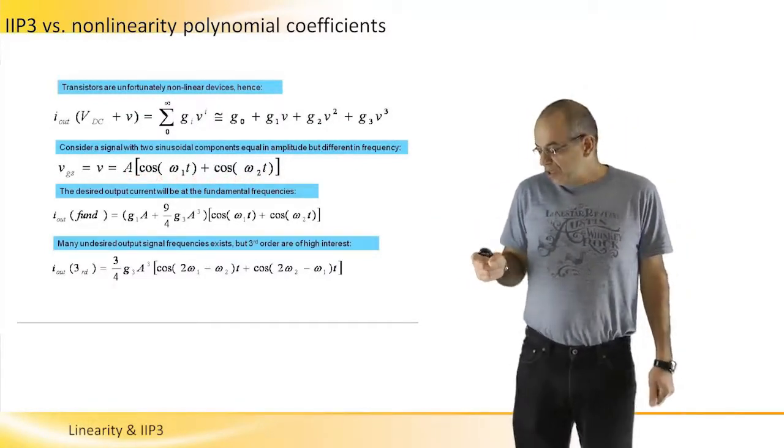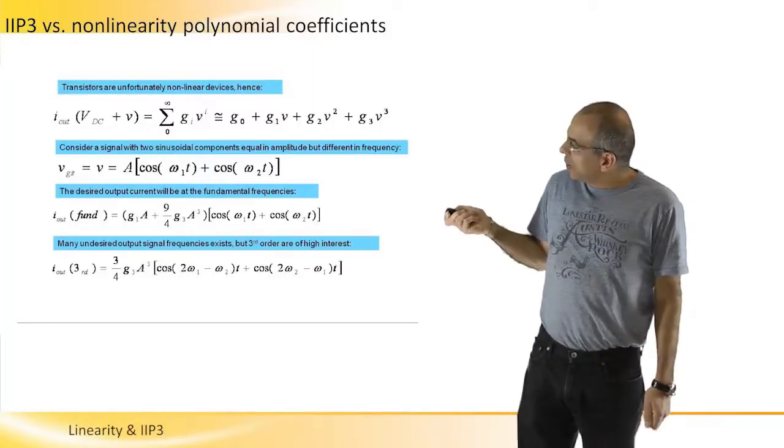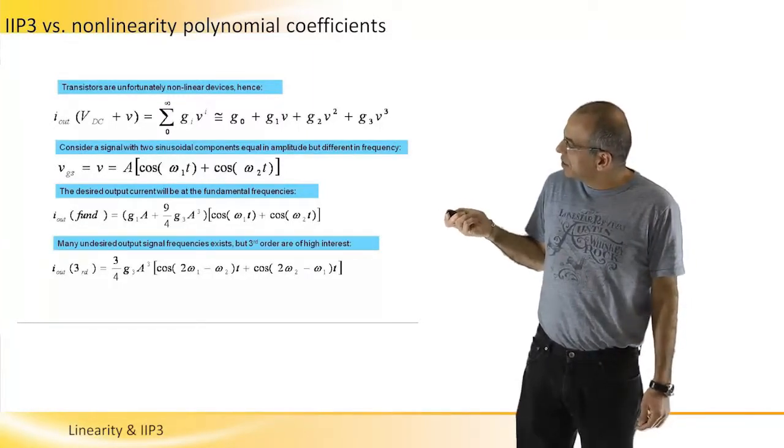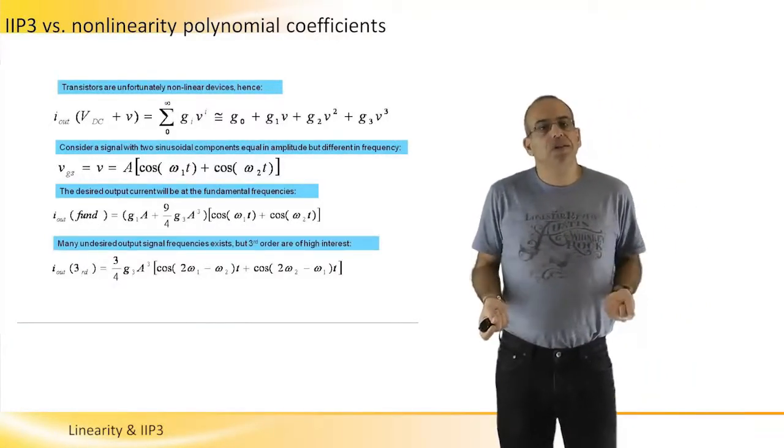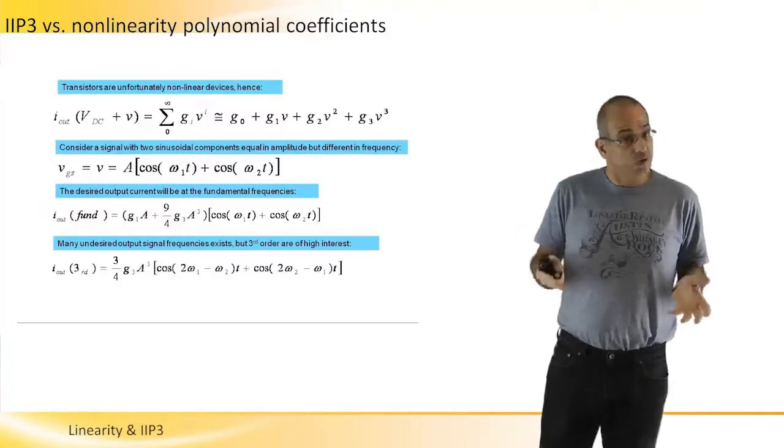And if we take VGS as the sum of two cosines, as we explained in the previous slide, all we need to do is we need to find what will be the output current resulted by this voltage.